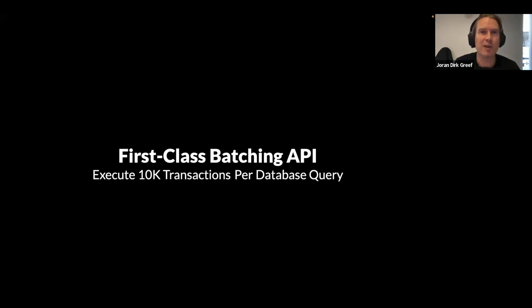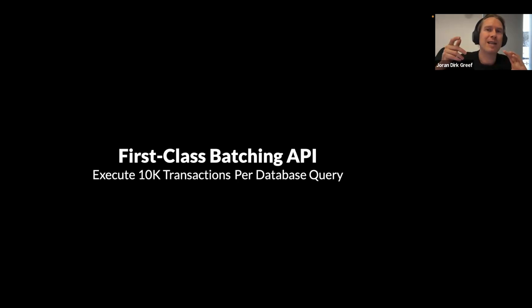The way we think about database interfaces is that you do one thing in one query. But our query languages aren't really meant for many things in one query. The right way to think about interfaces is that everything is a batch — the question is just whether it's a batch of one or 10,000. If your interface supports batching as a first-class primitive, it's really good for working with hardware.